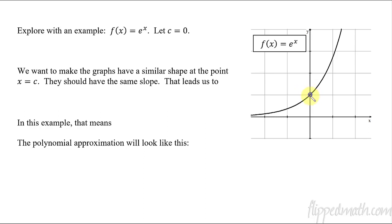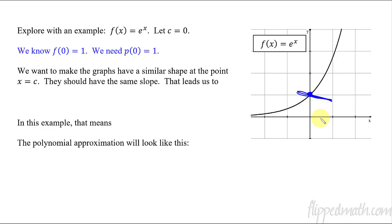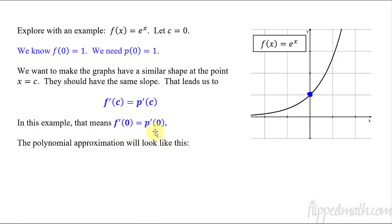That's our starting point — right there, put a dot. We want to center our approximation around that point. So if we know that f of 0 equals 1, then our polynomial approximation must also equal 1 when x equals 0. Now I also want to create a similar shape — let's match the same slope. So whatever the slope is right there, our polynomial will have the same slope. That's derivative stuff. So the first derivative of f must also equal the first derivative of p evaluated at x equals c, making the slopes the same.